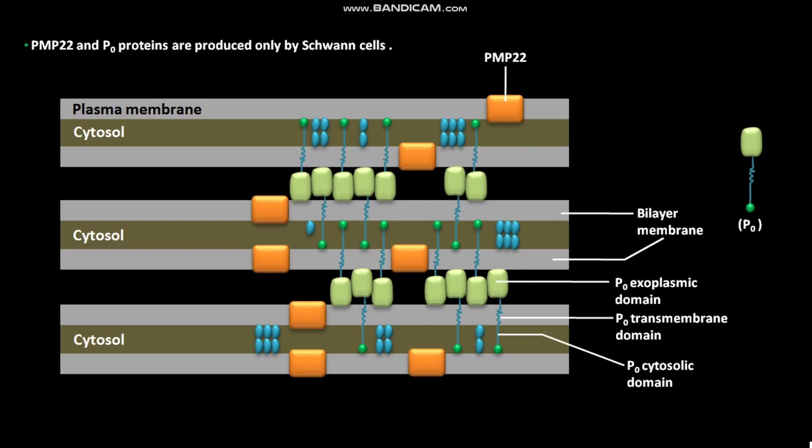The P0 exoplasmic domain has an immunoglobulin fold. It associates with similar P0 exoplasmic domains emanating from P0 proteins in the opposite membrane surface. By this association, these P0 exoplasmic domains zipper together the exoplasmic membrane surfaces in close apposition, forming exoplasmic apposition. A tryptophan residue present on the tip of the P0 exoplasmic domain binds to the lipids in the opposite membrane, stabilizing this interaction.